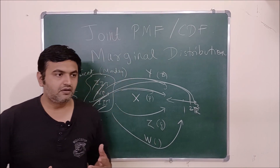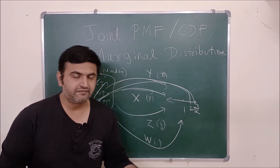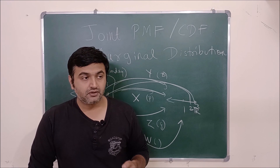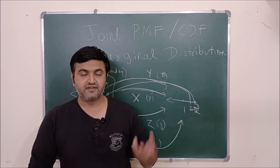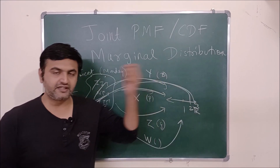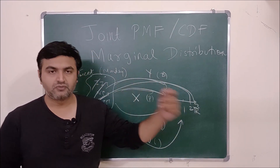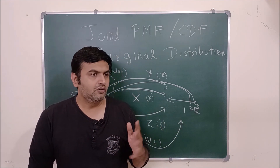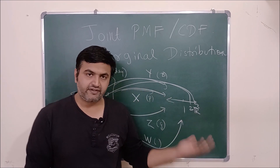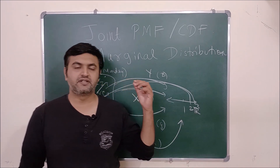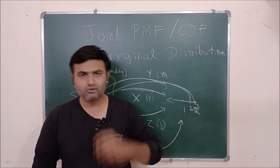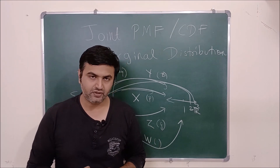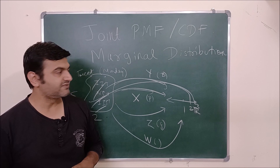Another random variable can classify which tweets are anti-national and which are not. Another can categorize tweets by language: map to 1 for English, 2 for Hindi, 3 for Marathi, 4 for Sanskrit, and so on. Yet another variable can indicate whether a tweet contains vulgar words or not. Like this, one can have plenty of random variables on a given sample space, and that is where joint PMF and CDF come into the picture.